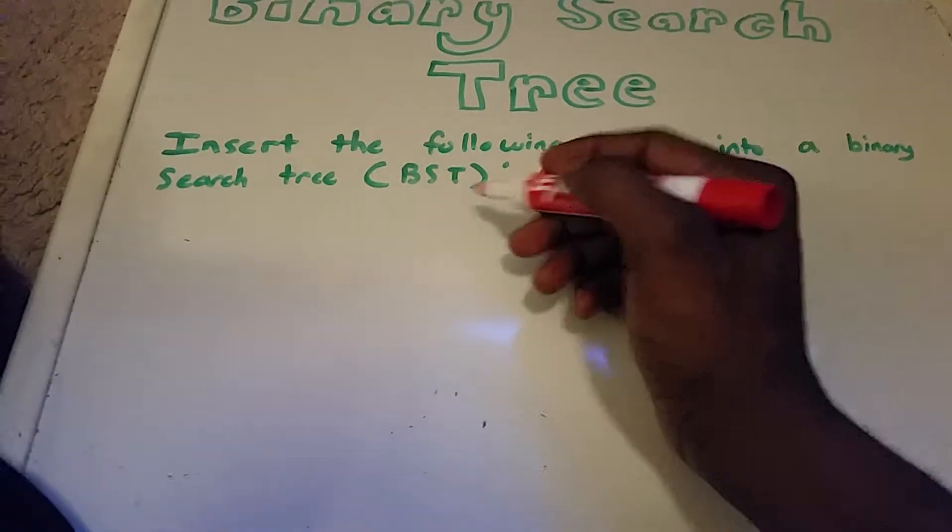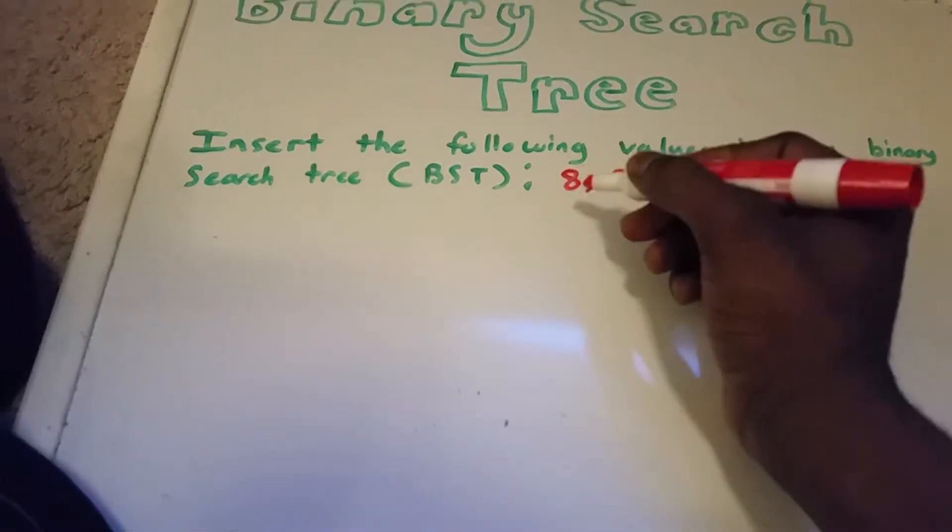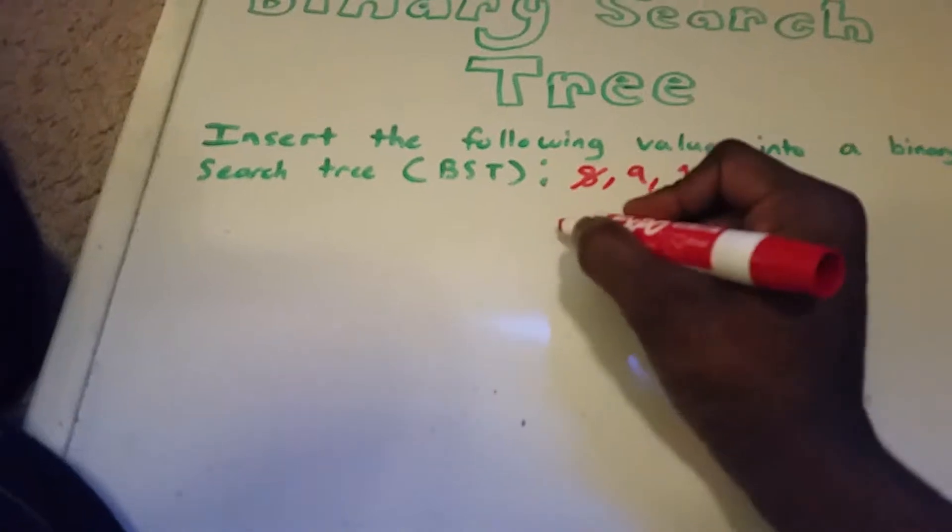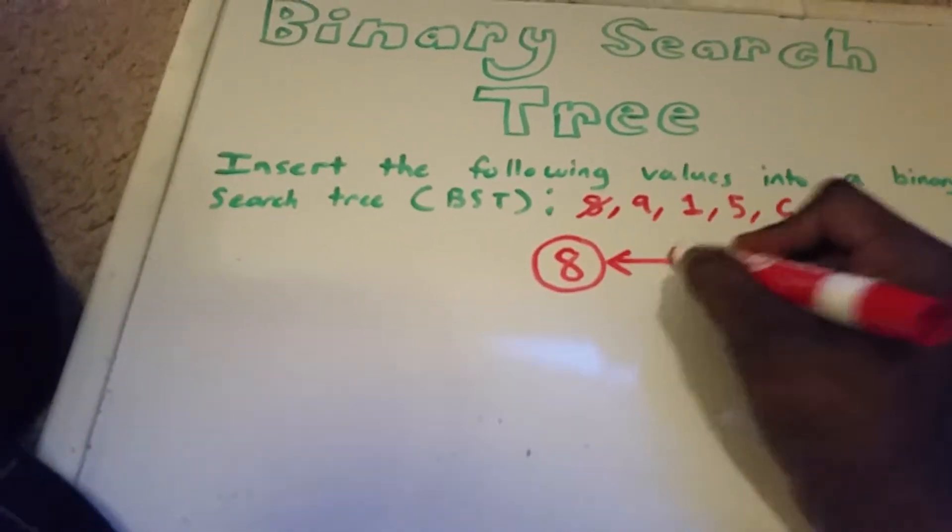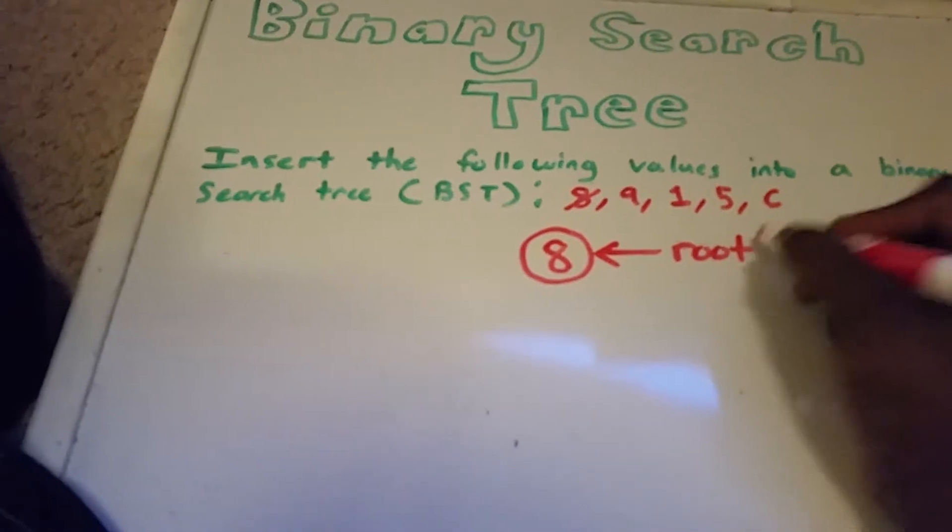So let's go ahead and get started. The first value that we're inserting into the tree is 8. I'm going to cross it out. So you guessed it, the 8 is our root node.